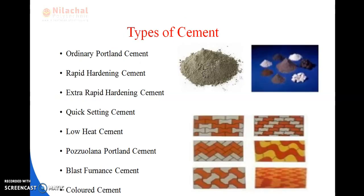So here we will be reading about the types of cement. The types of cement are: first, Ordinary Portland Cement (OPC); next, rapid hardening cement, extra rapid hardening cement, quick setting cement, low heat cement, Pozzolana Portland cement, blast furnace cement, and colored cement. These are the types of cement we are using in our construction sites.